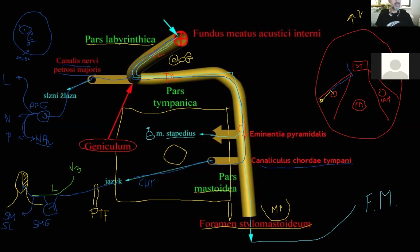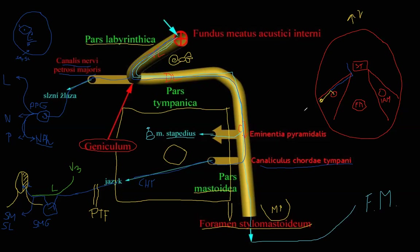We are missing one big gland not supplied by the facial nerve — the parotid gland. The parotid gland is supplied by the glossopharyngeal nerve. All the other major glands in the area are supplied by the facial nerve. So the visceromotor fibers leave the facial nerve via two nerves: the great petrosal nerve and the chorda tympani, with two ganglia: the pterygopalatine and the submandibular.